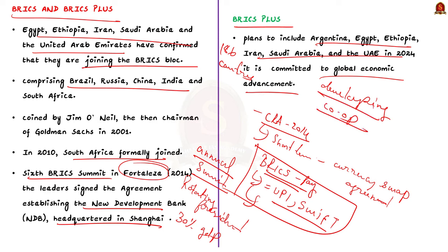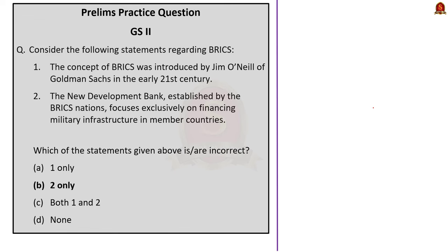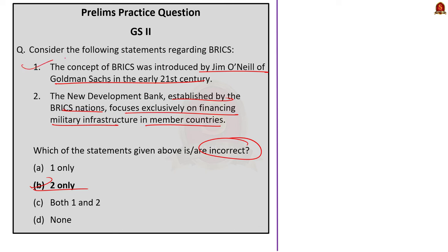Consider the following statements: the concept of BRICS was first introduced by Jim O'Neill of Goldman Sachs in the early 21st century; the New Development Bank established by the BRICS nations focuses exclusively on financing military infrastructure in the member countries. Which of the statements given above are incorrect? The correct answer is option B: two only. Statement one is correct. Statement two is incorrect because the New Development Bank was established with the primary focus of supporting infrastructure and sustainable development projects in BRICS and other emerging economies, not financing military infrastructure.